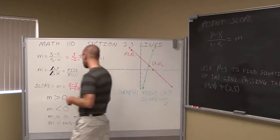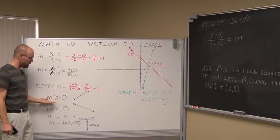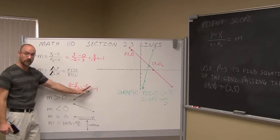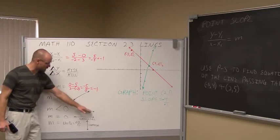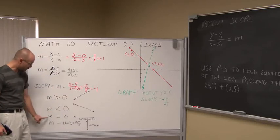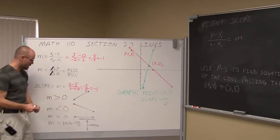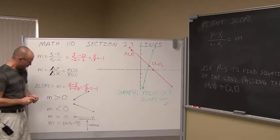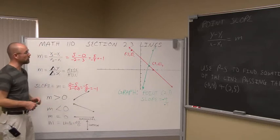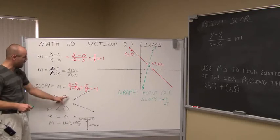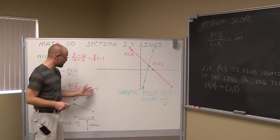Let's discuss a little more about slope. The notation m is used for slope in algebra. When m is greater than 0, the slope is positive and the line increases as we look left to right. A slope less than 0 means the line is decreasing — going down as we move from left to right. A slope of 0 means it's a horizontal line, and an undefined slope means x never changes. A positive slope increases left to right; a negative slope decreases left to right.